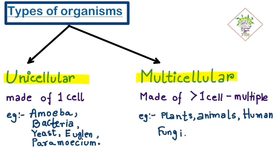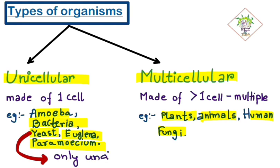Examples of unicellular organisms are amoeba, bacteria, yeast, euglena and paramecium. And the multicellular organisms are plants, animals, human and fungi. Here I want to say one thing that yeast is the only unicellular fungi. All other fungi are multicellular.